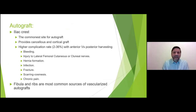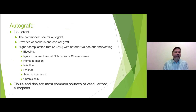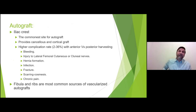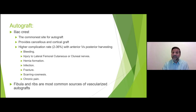The most commonly used autograft source is the iliac crest, with a complication rate between 2 to 36%. The anterior approach has more risks. Risks include bleeding, injury to surrounding nerves, hernia if one is very aggressive with muscle insertion, infection, fracture, scar and cosmesis issues, and chronic pain related to the position of the harvest site close to where the belt sits.